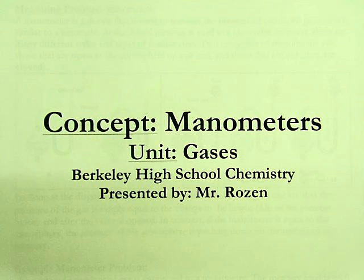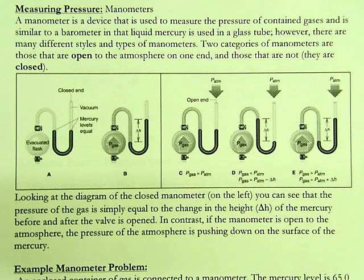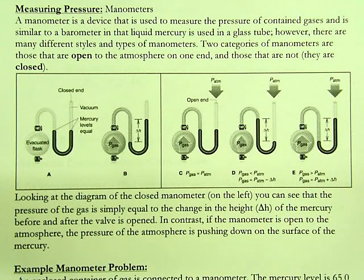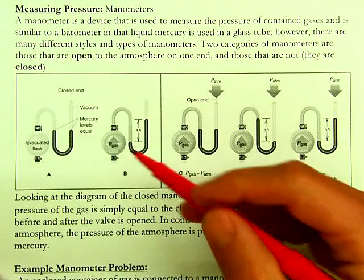Hello young chemists, today we're going to talk about manometers, which can be used to measure the pressure of a sample of gas. In class we talked about barometers — a barometer is a device used to measure atmospheric pressure. It has a glass tube filled with mercury, a liquid metal at room temperature, inverted in a dish of mercury. The atmospheric pressure supports a column of mercury, usually measured in millimeters of mercury, which is mmHg.